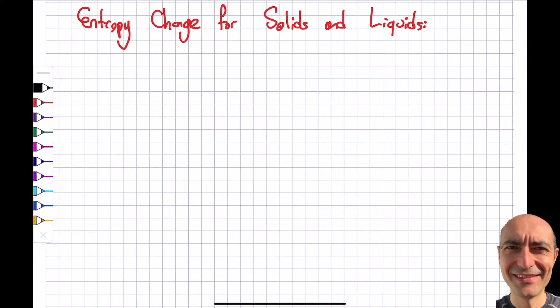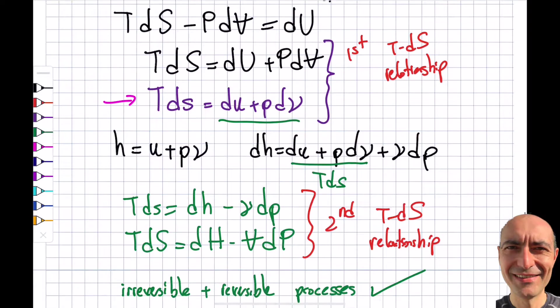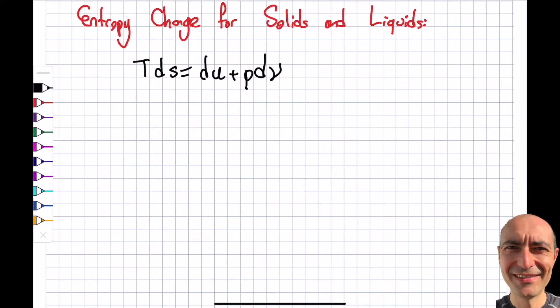The first thing I want to do is write the first TDS relationship in lowercase form. It's actually right here. So I'm writing this down, copy paste. What am I supposed to do with this? For a solid and a liquid, one thing we discussed in module 4 second half was the specific heat concept. We applied the first law to solids and liquids. Now I'm doing second law. We said that dv is going to be zero. Why? Because they are typically incompressible, specifically solids, absolutely yes.